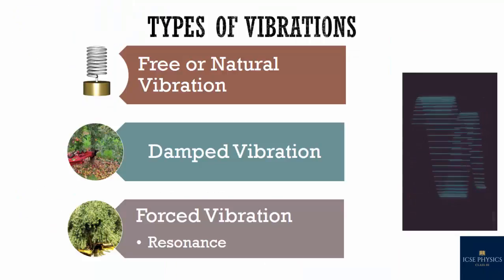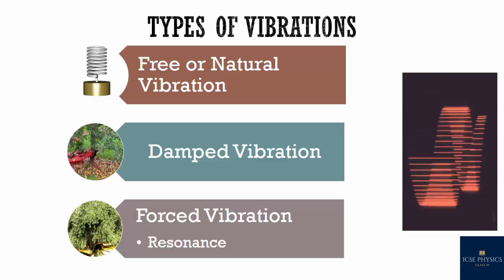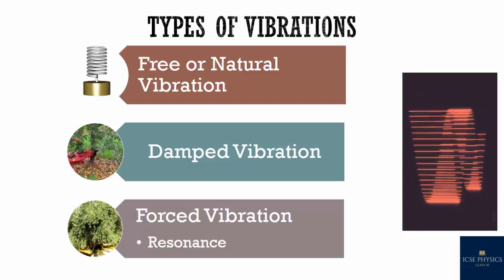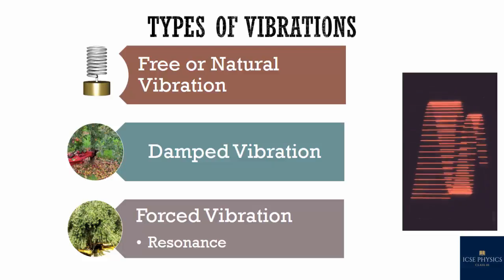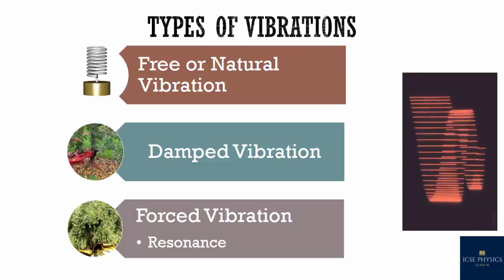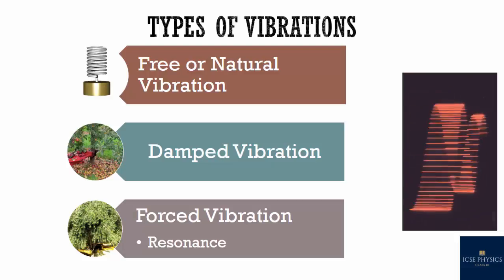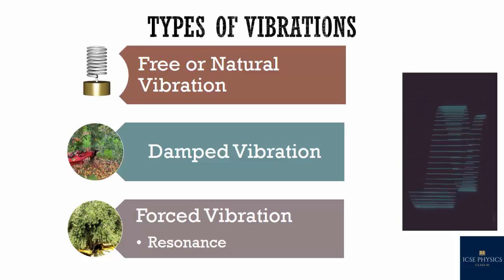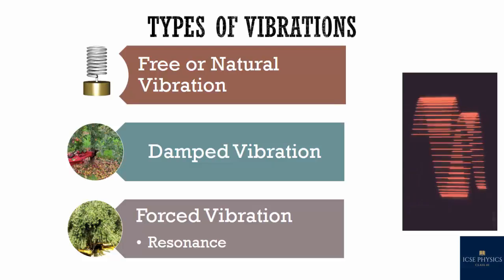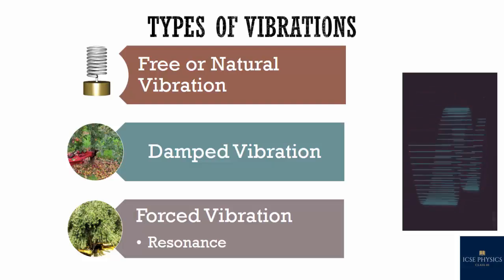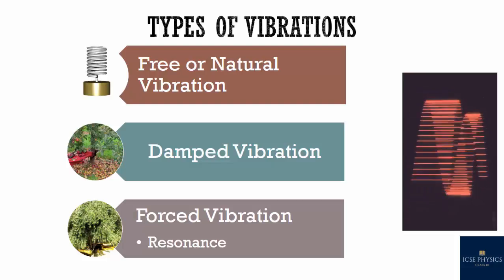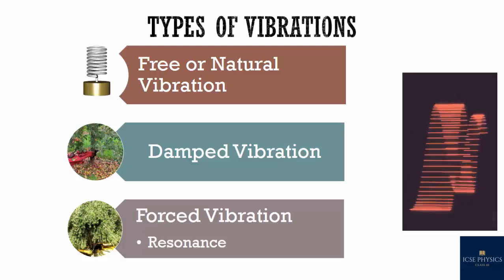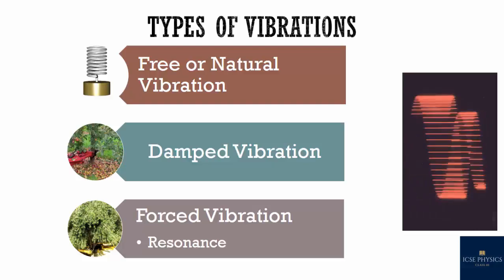Types of vibration or oscillations: sound is produced when a body vibrates, that means they move back and forth — they vibrate, shake, and oscillate. Even atoms move back and forth from their mean positions, so vibrations are an inseparable part of nature. There are three types of vibrations: free or natural vibration, damped vibration, and forced vibration.